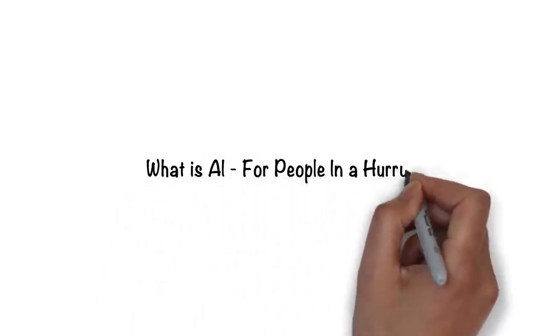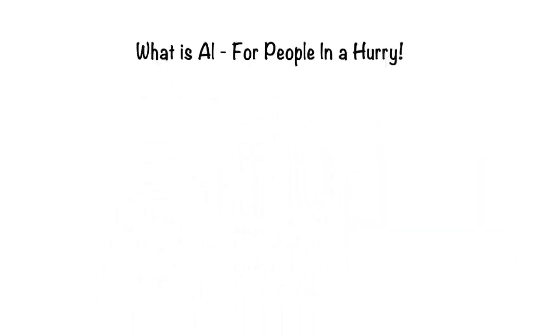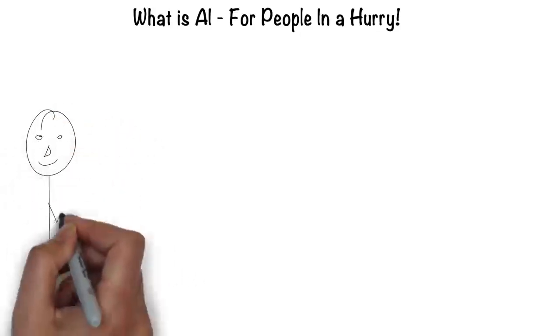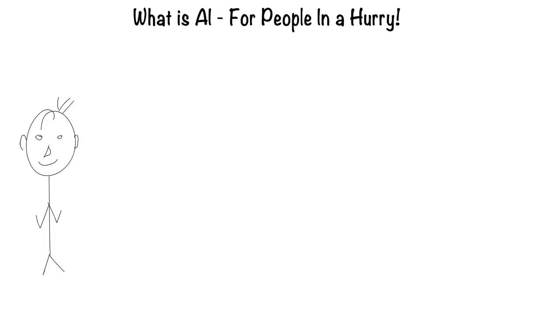Artificial intelligence for people in a hurry. The easiest way to think about artificial intelligence is in the context of a human. After all, humans are the most intelligent creatures we know of.